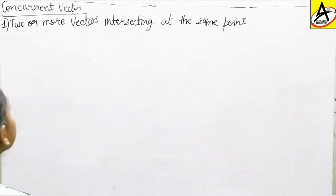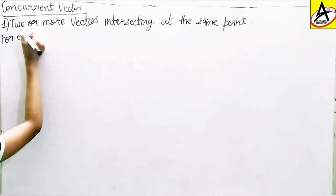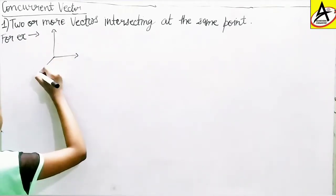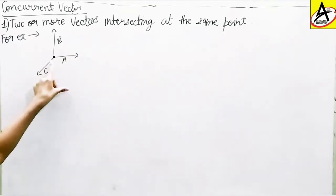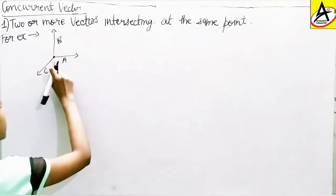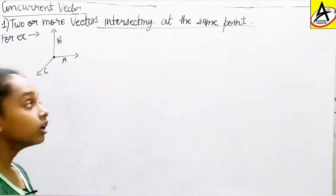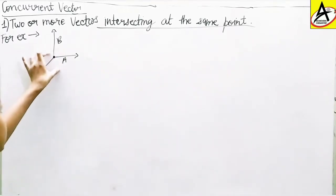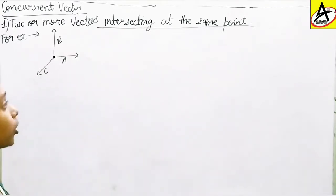Let me give you an example so you can understand clearly. As you can see, there are arrows — this one is B, this one is A, this one is C. This point is joining these three vectors together; they are intersecting each other and they are at the same point, starting from a common point. So these are concurrent vectors by the first definition.